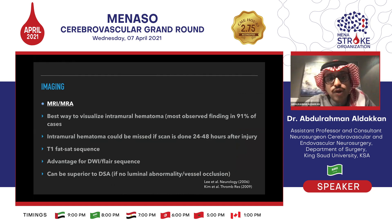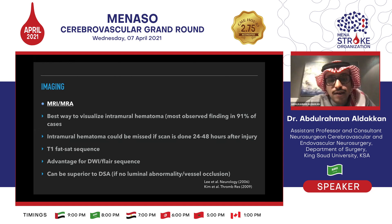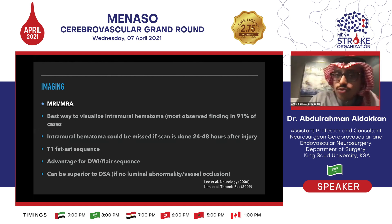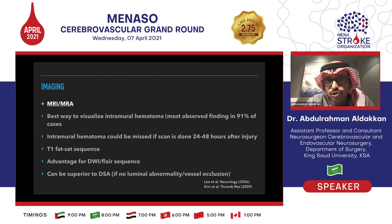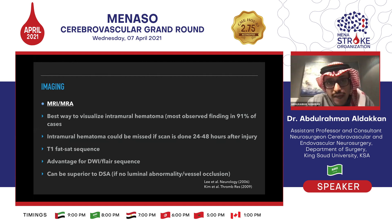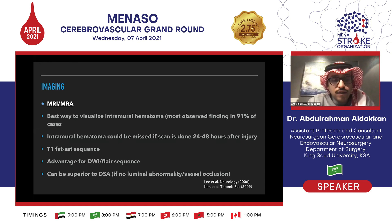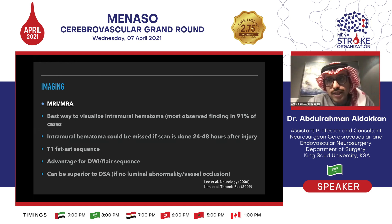MRI and MRA is the best way to visualize the intramural hematoma, especially on the T2 fat-saturated image. The intramural hematoma can be missed if the scan is done within 24 or 48 hours immediately after the injury. MRI also has the advantage of looking at FLAIR sequences as well as diffusion-weighted imaging to see if there is already an established or silent infarct, or areas of penumbra affected by hemodynamic changes after the dissection. MRI can be superior to angiogram especially if there is no luminal abnormality or if there is vessel occlusion, because the cerebral angiogram is a luminogram — we only see what goes into the lumen, not what's happening in the vessel wall unless there is a compromise to the lumen.